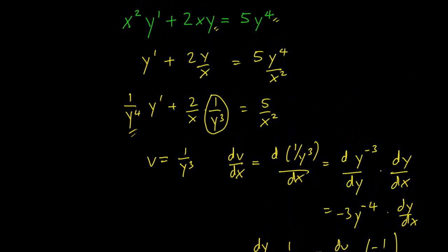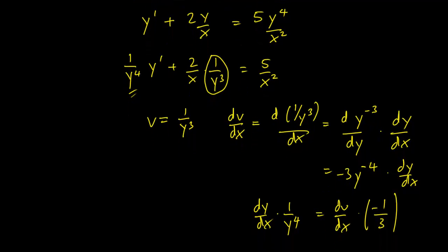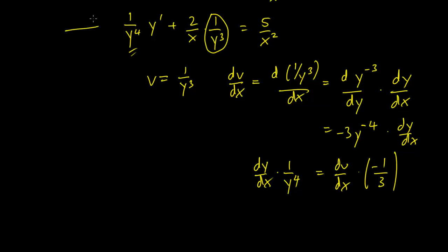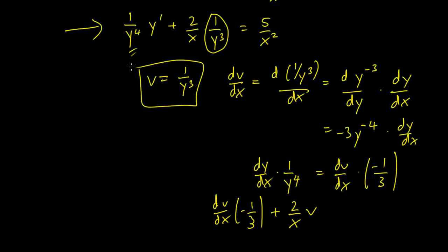We can substitute that into this equation to obtain dv/dx times minus 1 over 3, plus 2 over x times v, equals 5 over x squared.